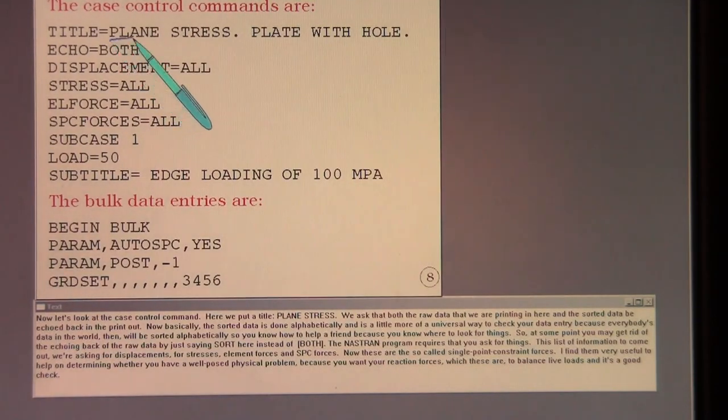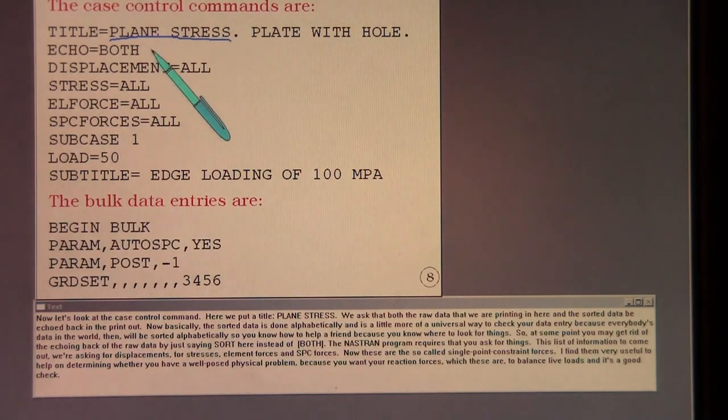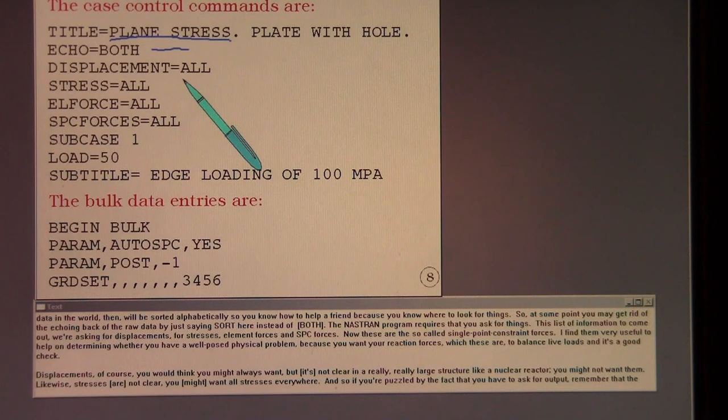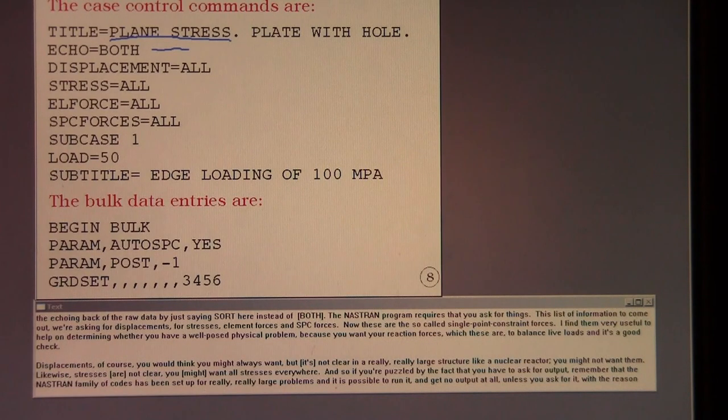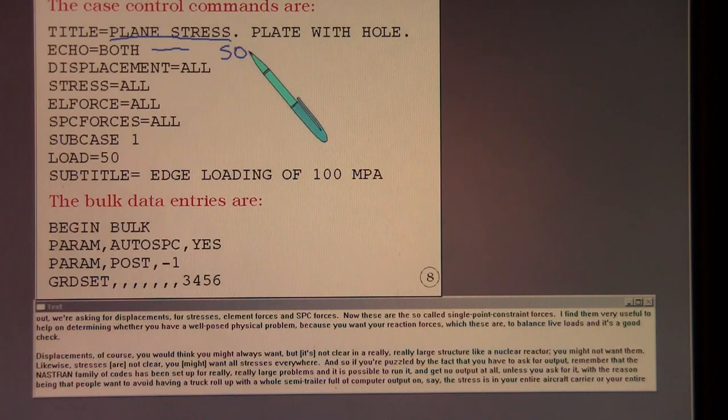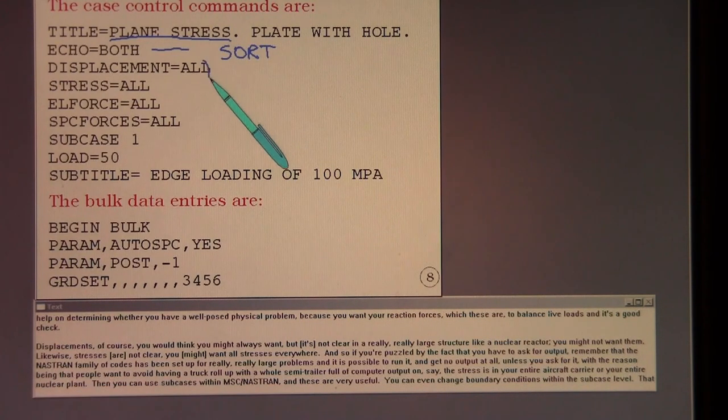Now let's look at the case control commands. Here we put a title, plain stress. We ask that both the raw data that we are printing in here and the sorted data be echoed back in the printout. Now basically the sorted data is done alphabetically and is a little more of a universal way to check your data entry because everybody's data in the world then will be sorted alphabetically so you know how to help a friend because you know where to look for things. So at some point you may get rid of the echoing back of the raw data by just saying sort here instead of echo, S-O-R-T.